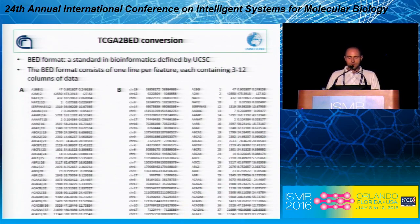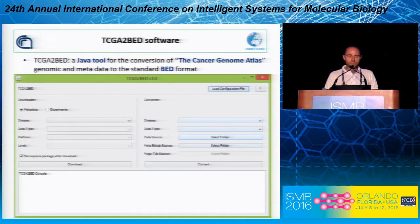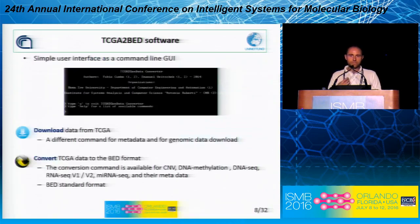For instance, with RNA-seq we have here that the data only contains the raw counts and some additional measures. What we did with our software is to extend this TCGA data with the genomic coordinates, so that you can perform GMQL queries that take into account these coordinates. You can download this software called TCGA to BED in order to convert your own data from the Cancer Genome Atlas. It has a user-friendly interface written in Java, and you can also do batch processing by loading a configuration file where you can specify all the data to convert.